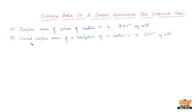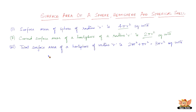The next one is curved surface area of a hemisphere of radius r is 2 pi r square square units. The next one is the total surface area of a hemisphere of radius r is 2 pi r square plus pi r square, equal to 3 pi r square square units. The reason for this addition is that the total surface area of a hemisphere is the sum of the curved surface area and the base.